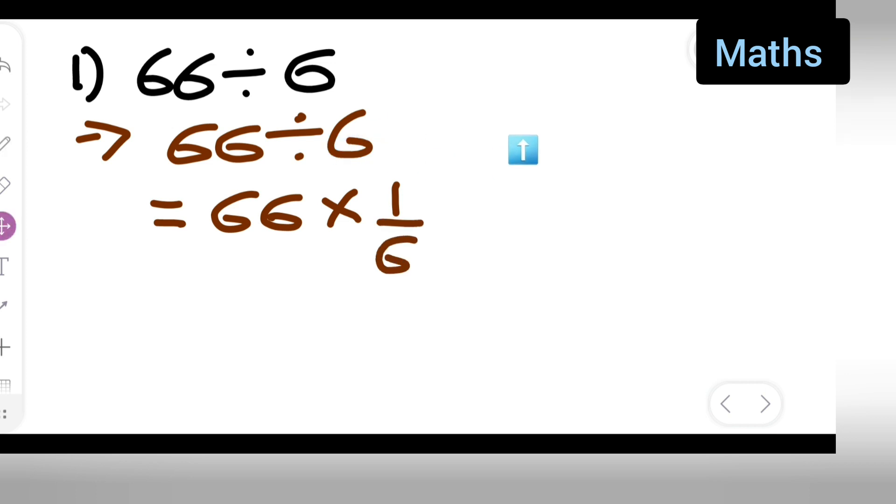Now what is this going to give you? 66 upon 6. Your answer is going to be 66 upon 6. So now you can cancel it.